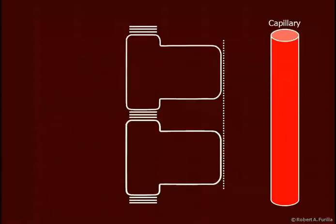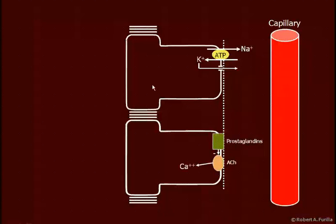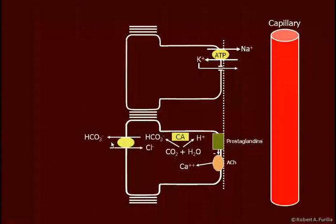Looking at mucus secretion: sodium-potassium ATPase pumps and open potassium channels are present on the epithelial cells. These mucus-secreting cells are triggered by ACH, which causes an increase in calcium concentration through the second messenger IP3. Prostaglandins inhibit. CO2 and water lead to bicarbonate and hydrogen ions; bicarbonate is exchanged for chloride ions, developing a high bicarbonate concentration at the apical surface, while the chloride that comes in moves down its electrochemical gradient back into the blood.